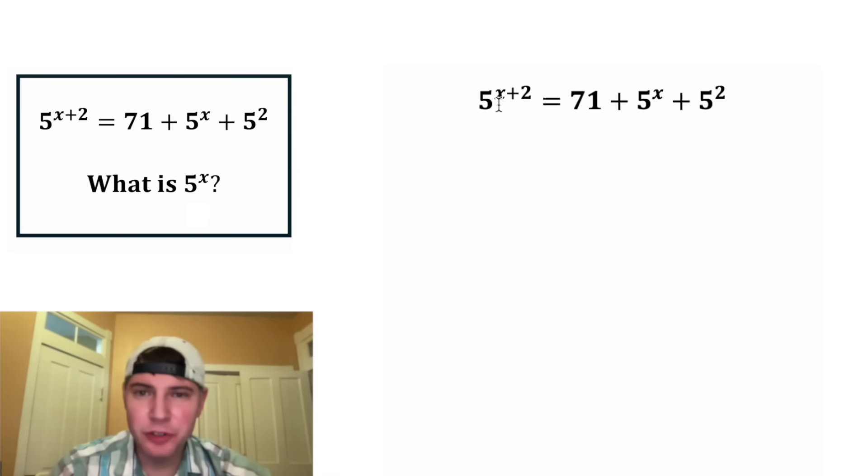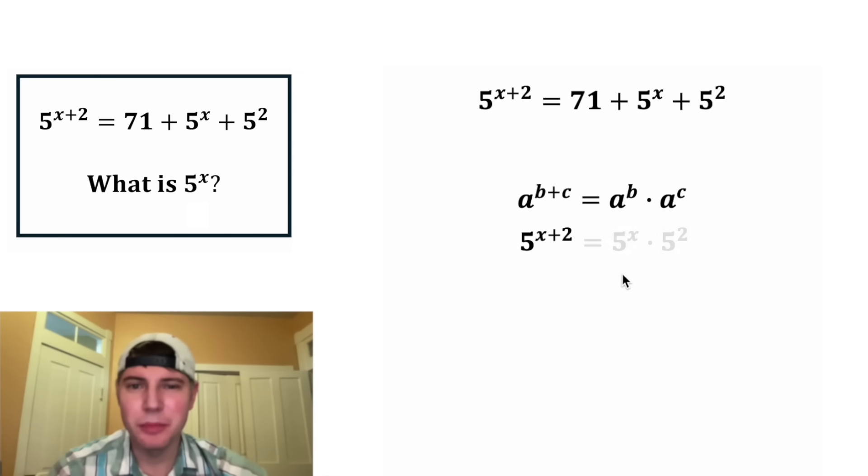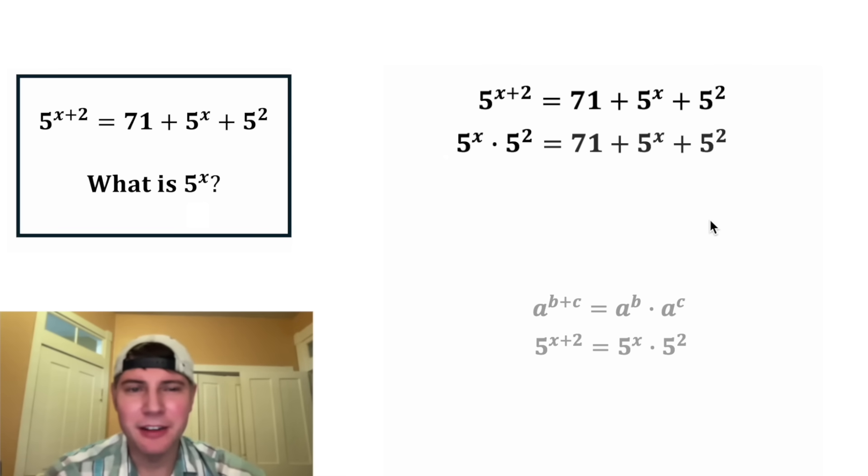First, I'm noticing in the exponent, we have two terms being added. That reminds me of these notes right here. Anytime you have two terms being added in an exponent, you can split it up like this. So a to the b plus c can be rewritten as a to the b times a to the c. Or in this case, 5 to the x plus 2 can be rewritten as 5 to the x times 5 to the 2. Let's change that up here, and then we can copy down everything else.